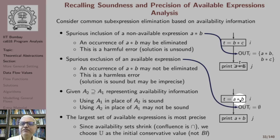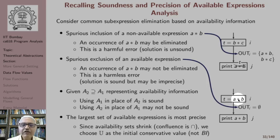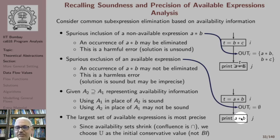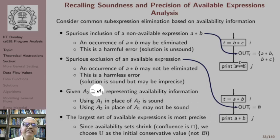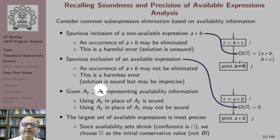By contrast, if expression A*B is available but our set of available expressions is the empty set — spurious exclusion of an expression we know is available — an occurrence of A*B may not be eliminated. This is an error, but a harmless error. The solution is sound because nothing goes wrong, though it may be imprecise since we missed an opportunity for common subexpression elimination. We generalize: given sets A2 which is a superset of A1, using A1 in place of A2 is sound; using A2 in place of A1 may not be sound — a smaller set is sound, a larger set may not be.